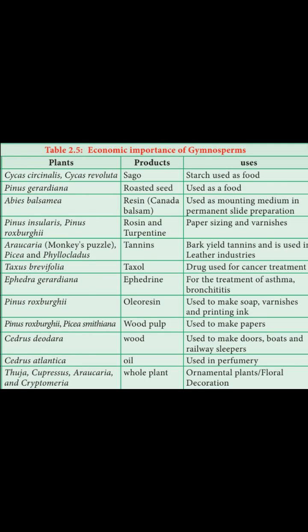Cedrus atlantica produces oil that is used in perfume. Thuja, Araucaria, and Cryptomeria — the whole plant or parts of these — are used as ornamental plants and for floor decoration. So these are the various economic importances of gymnosperms. Thank you, students.